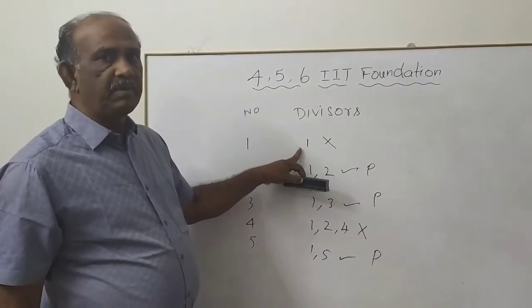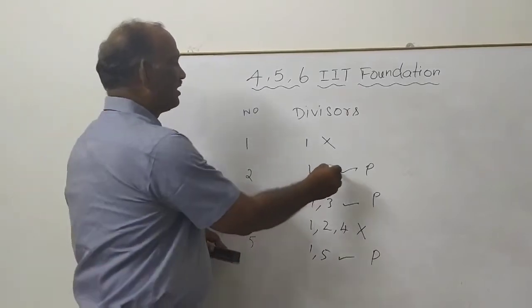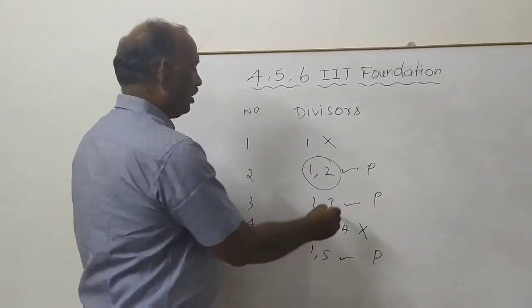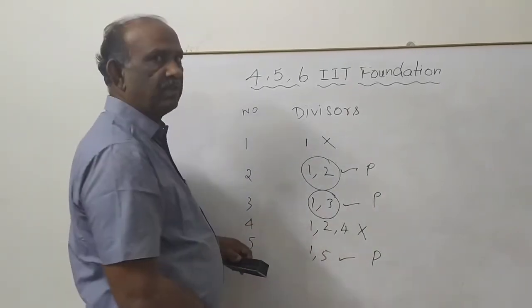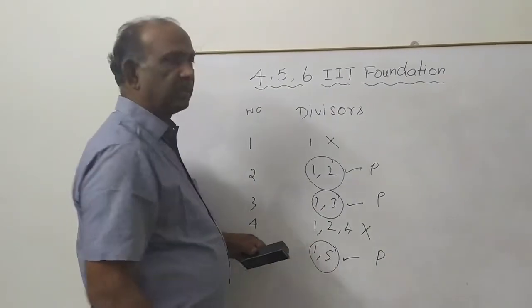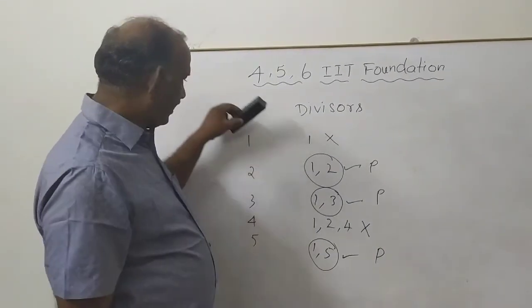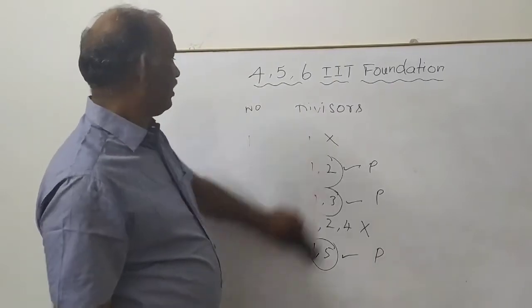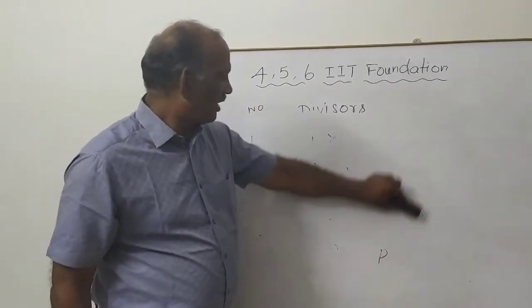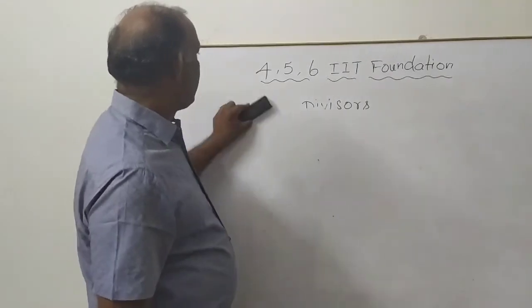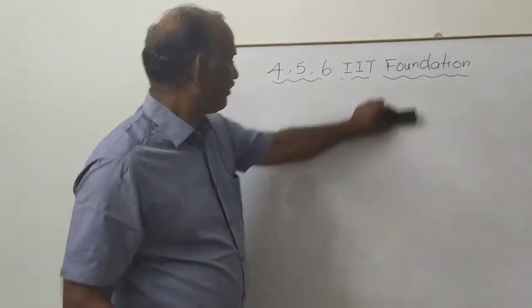This is not a prime number. Only 2 divisors, prime number. Only 2 divisors, prime number. Like that, you can try some more numbers. Like that, you can try and you can find out what are the divisors of 6.